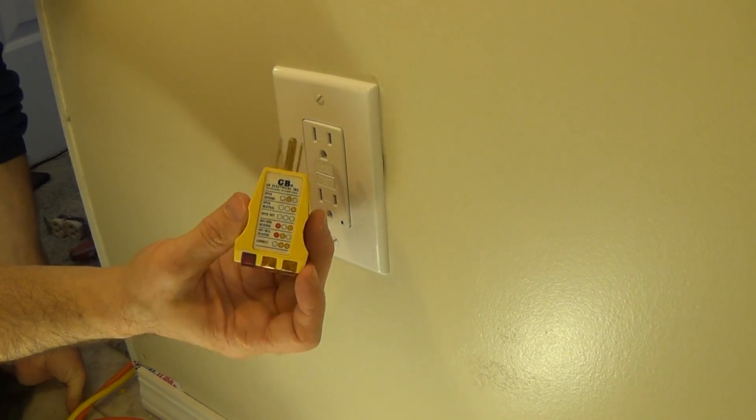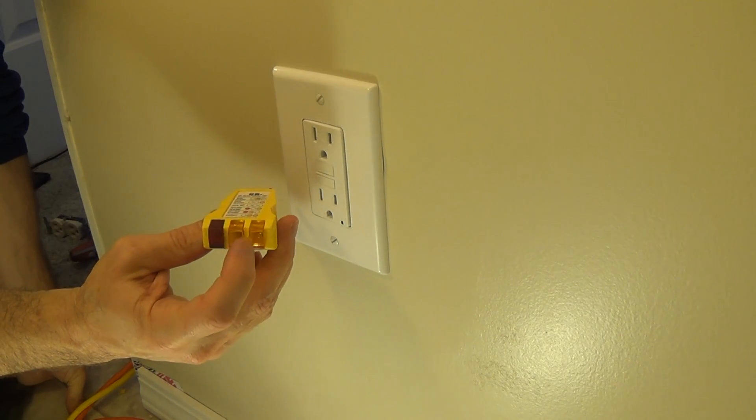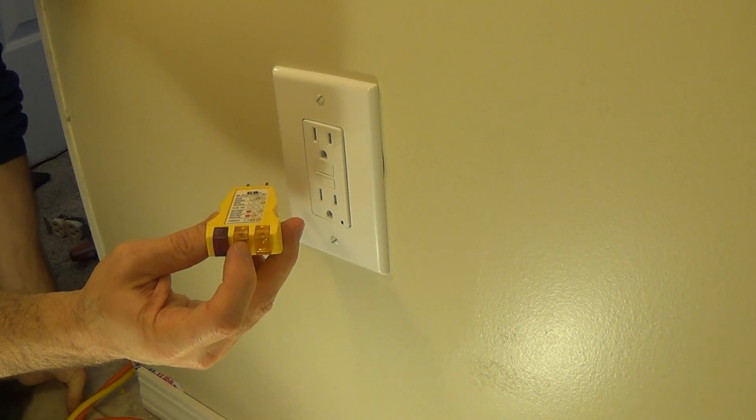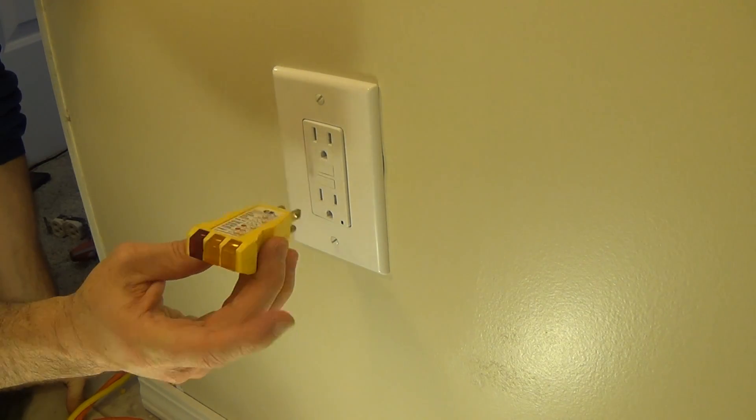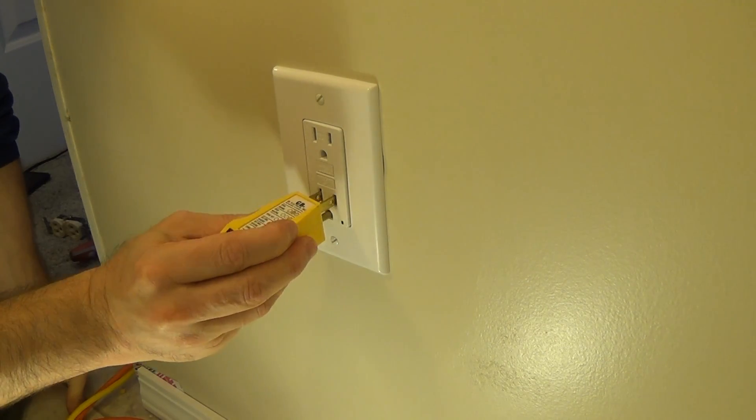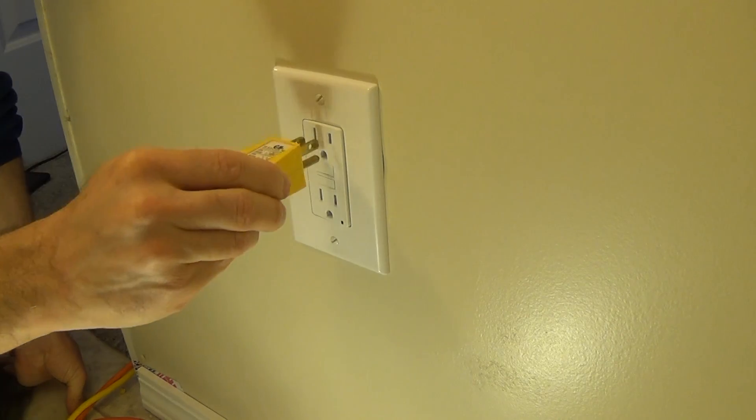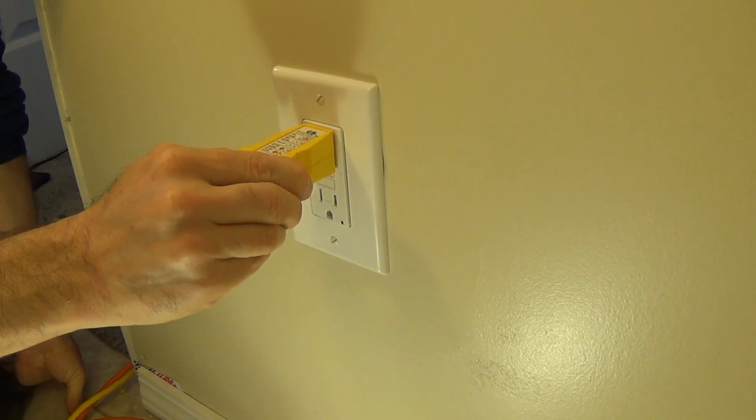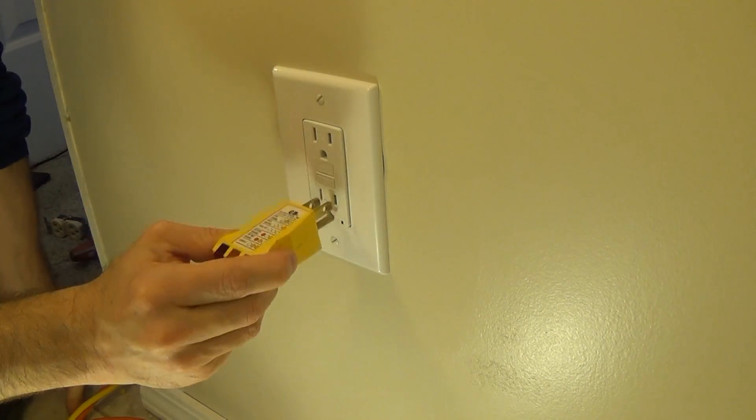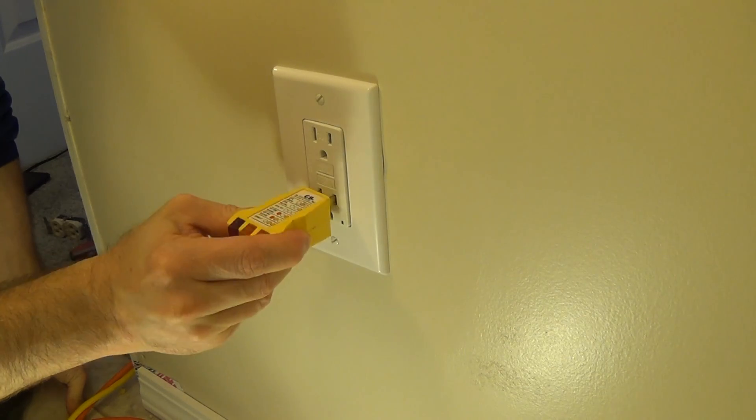Okay, with the power back on we want to test to make sure we wired it correctly. We have this little tester here. When these two lights right here come on together and this one stays off, then we know it's wired properly. Go ahead and plug it in, and indeed it is wired properly. Go ahead and test the top one, that one as well.